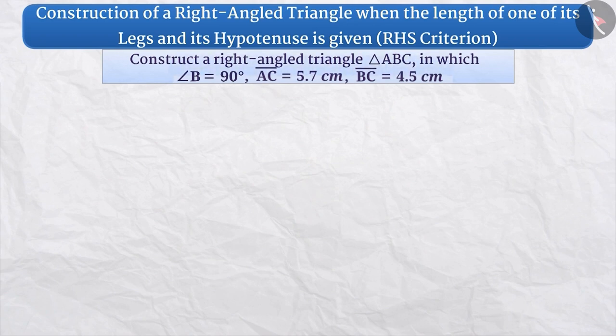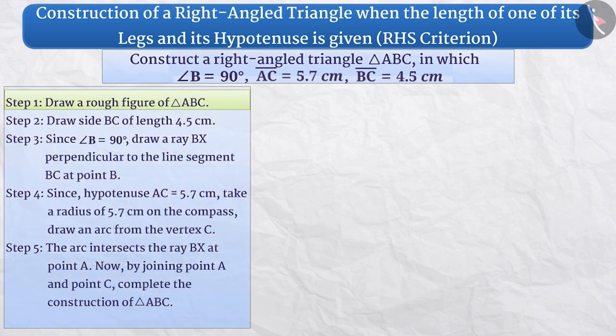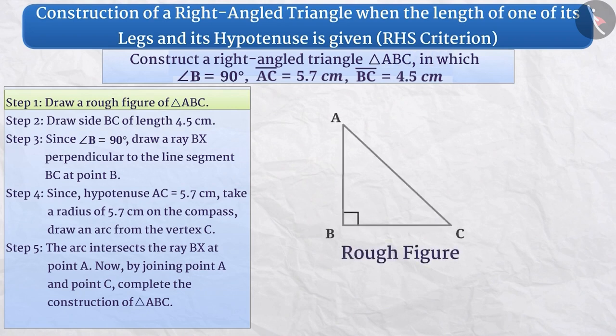Let us construct a triangle ABC with the given measurements. Step 1. First of all, we will draw a rough figure of triangle ABC with the given measurements and mark the given measurements on it. Drawing a rough figure gives us an idea of how a triangle can be formed.